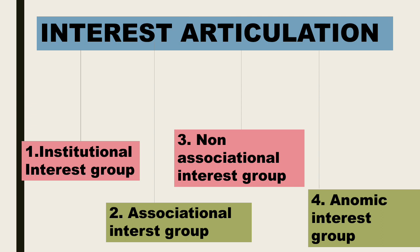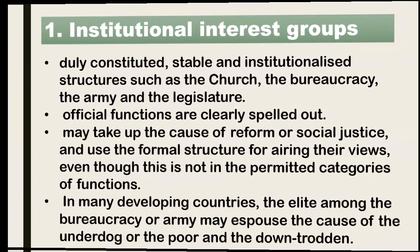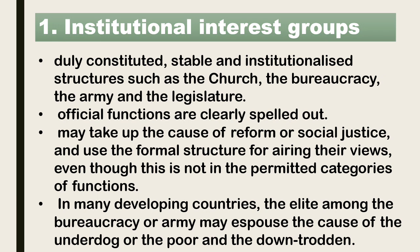Interest articulation is divided into four types: institutional interest group, associational interest group, non-associational interest group, and anomic interest groups। Institutional interest groups यानि संस्थागत समूह होते हैं जैसे church, army, legislature, bureaucracy। ये groups बहुत formal होते हैं, इनका structure, functions और activities बहुत organized होती है। Bureaucrats और executives professional और powerful होते हैं, इसलिए ये अपनी demands political system की authorities तक easily पहुचा सकते हैं और the authority is forced to act accordingly।